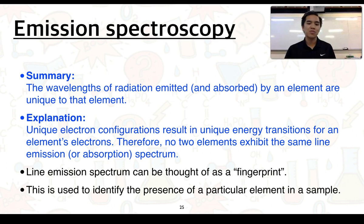We can think of line emission spectrum as a kind of fingerprint or a barcode. This is going to be used to help identify the presence of a particular element in a sample.